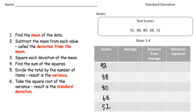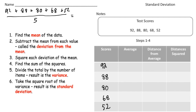Step number one is to find the mean of the data. I need to add up these scores and divide by five. So I add 92 plus 88 plus 80 plus 68 plus 52, divide by five, and I get a mean of 76. I'll put 76 in the mean column for all rows.